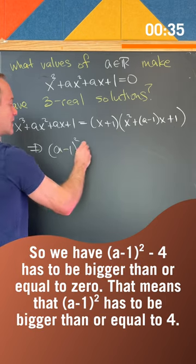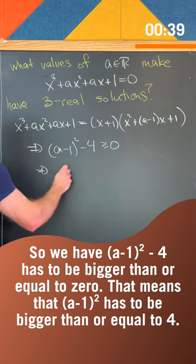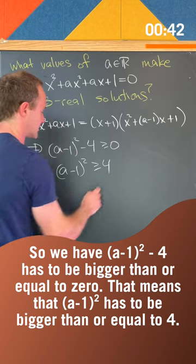So we have (a-1)² - 4 has to be bigger than or equal to zero. That means that (a-1)² has to be bigger than or equal to 4.